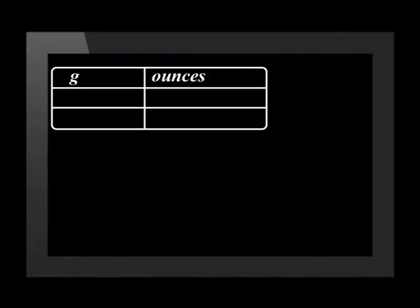We will use the table. Firstly, we fill in the units used in the question. In this case, it is grams and ounces. Next, we fill in what we have to convert under the correct heading. In this case, it is 675 grams under the heading grams. Lastly, we fill in the conversion factor, keeping the same units in the same column. For this question, we write 1 under the heading gram and 0,0353 under the heading ounces.